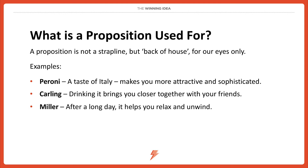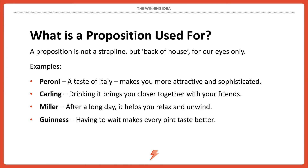Miller's proposition, for instance, is that after a long day it helps you relax and unwind — a fictional example based on the advertising we see for this brand. And finally, Guinness: having to wait makes every pint taste better. They've turned a drawback or a negative into a positive, condensed it into a proposition, and can now build an entire campaign off the back of that.